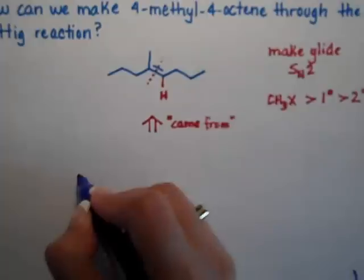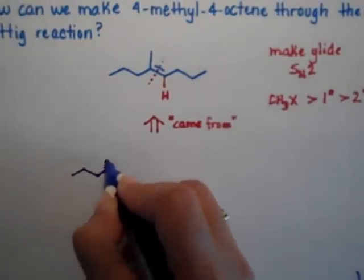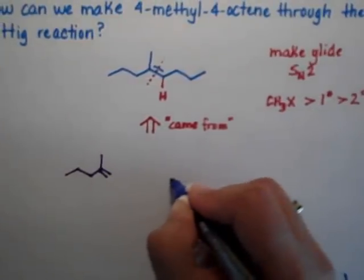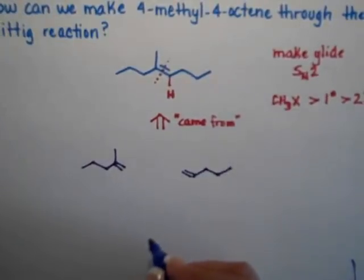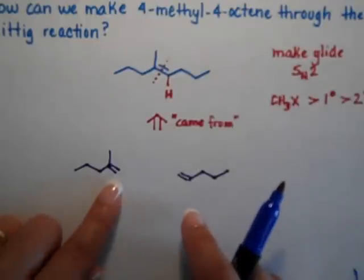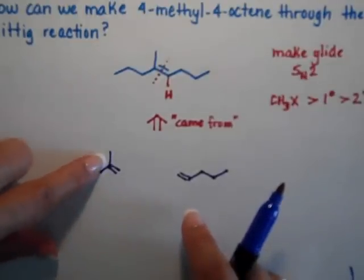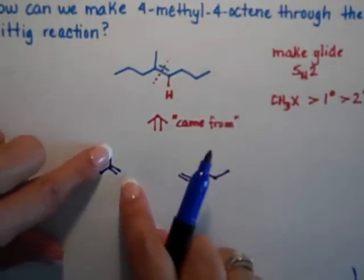So you separate your double bonds, and we're going to make the more substituted carbon. This one we said that it was secondary, it's attached to two carbons.